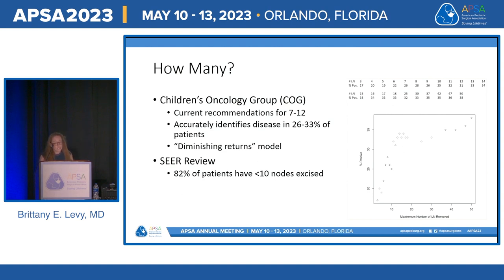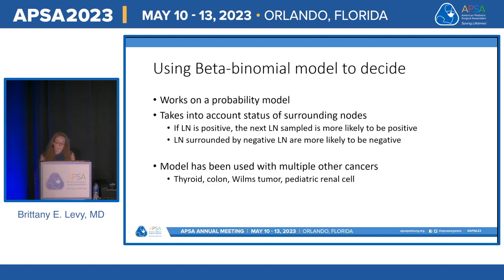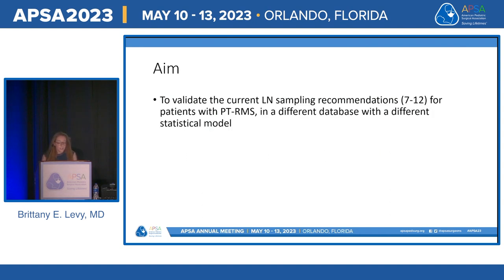The number of lymph nodes needed for adequate staging has long been sought. Recently, the Children's Oncology Group recommended 7 to 12 lymph nodes based on a diminishing return statistical model. A prior SEER review identified that over 80% of patients have fewer than 10 lymph nodes excised. We used a beta-binomial model to validate these recommendations, which accounts for the probability of a nearby lymph node being positive or negative if a prior positive node was identified. This model has been validated in many other cancer types.